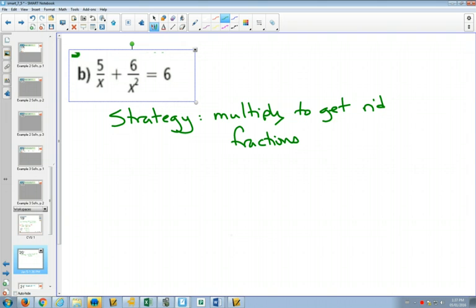So if I'm looking at these, I would probably say, well, x squared is bigger than x. It has more things than just x. So I would start by multiplying everything by x squared.